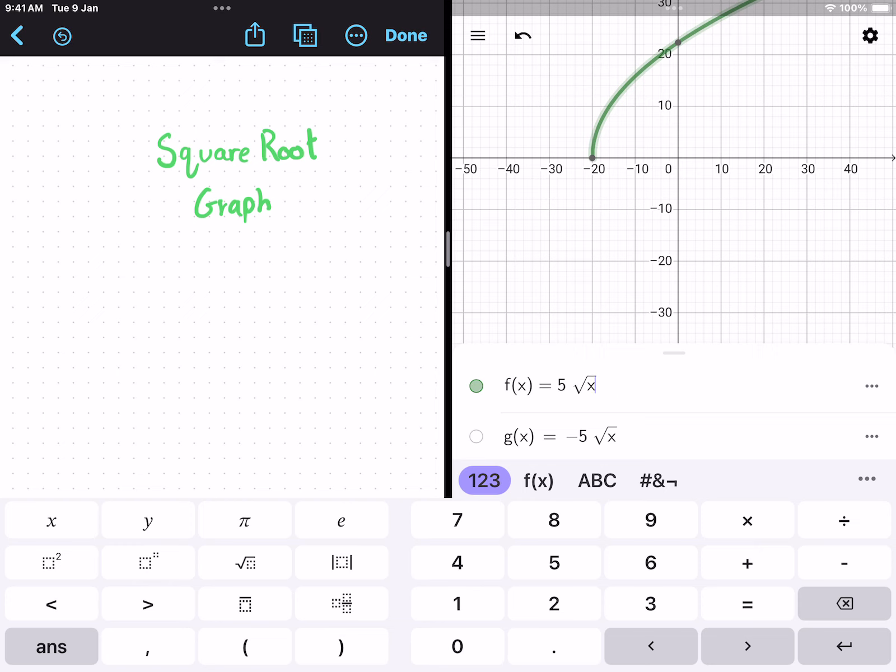Now, what if we want to shift it to the right? Then we'll have to minus 20, or whatever number you want, and it gets shifted to the right.